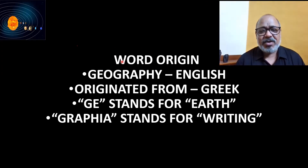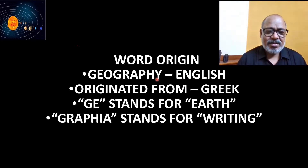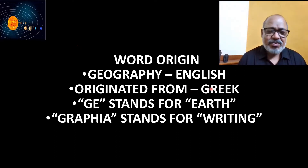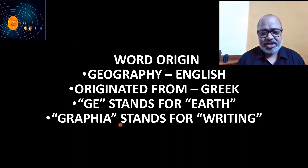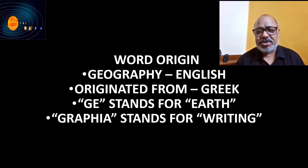First, we come to the word origin. Geography is a term from the English language. This term geography has originated from two Greek terms: number one, GEO, that stands for the Earth, and GRAPHIA — G-R-A-P-H-I-A — that stands for writing. So GEO plus GRAPHIA equals geography, which means writing about the Earth.